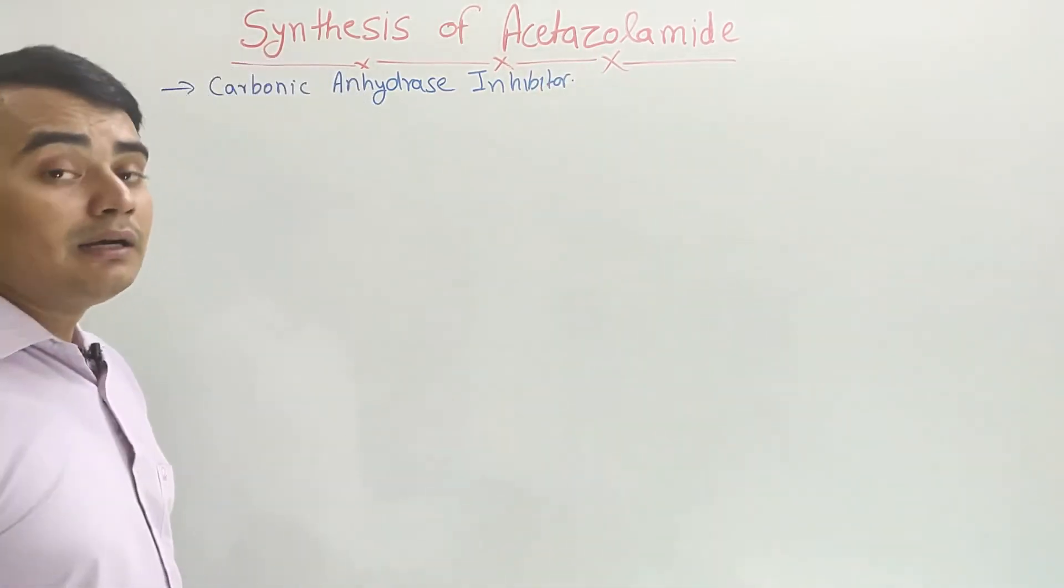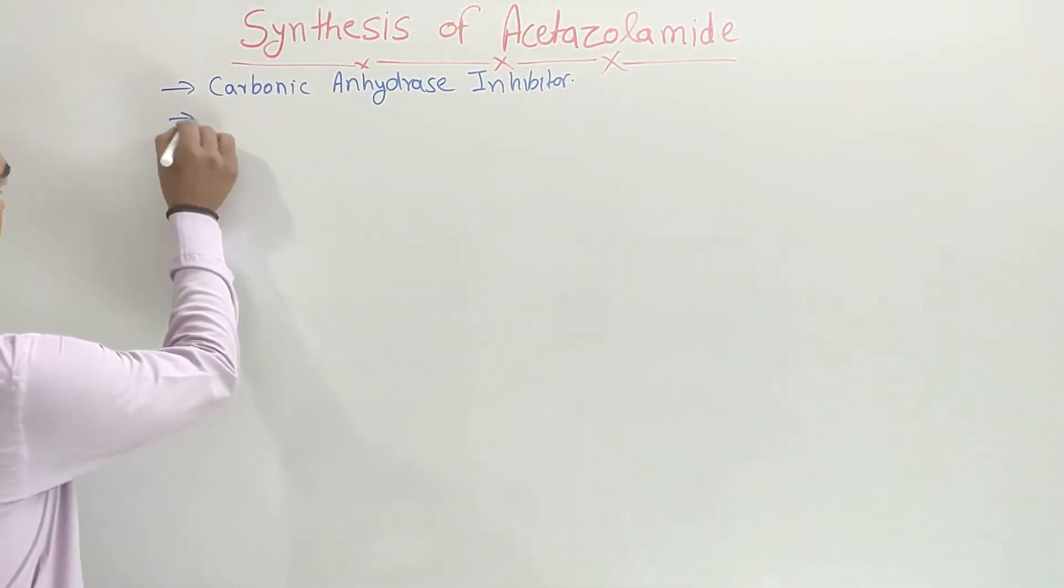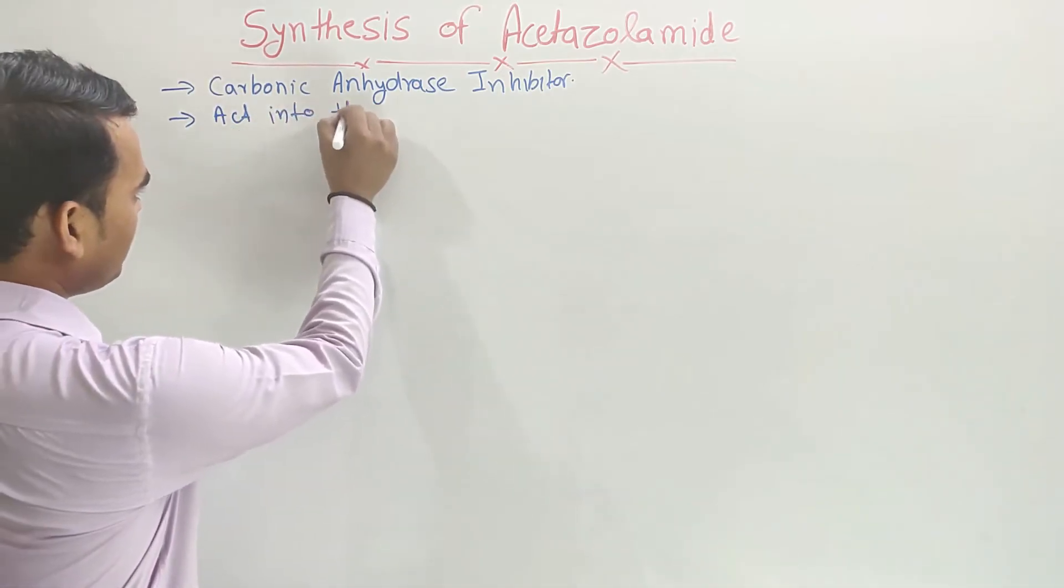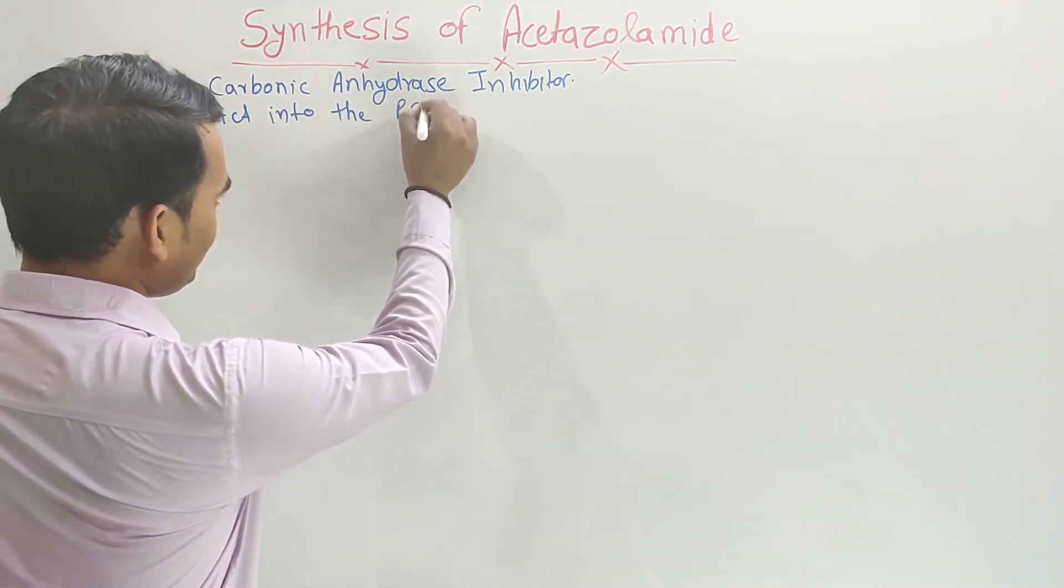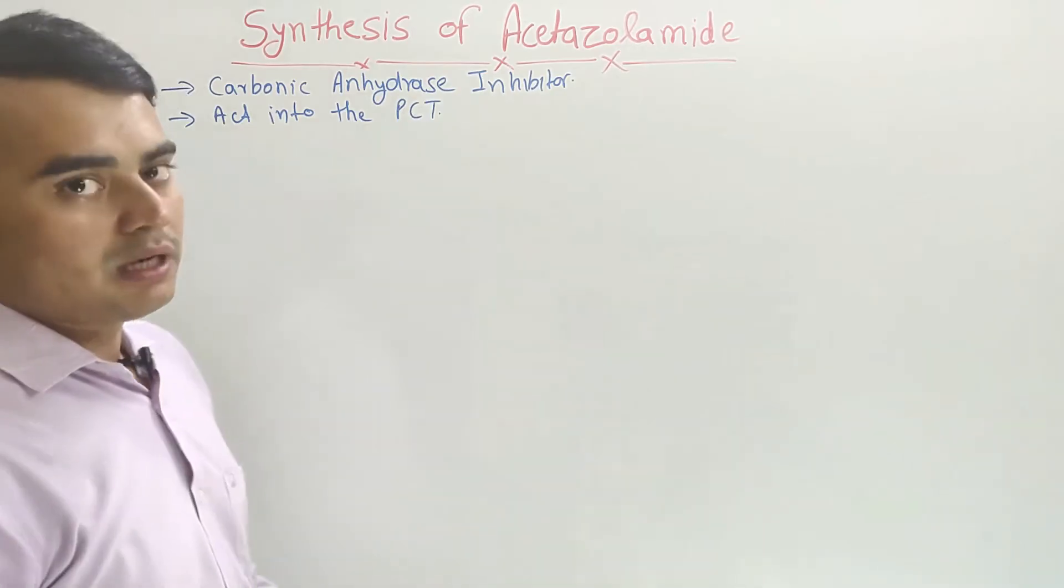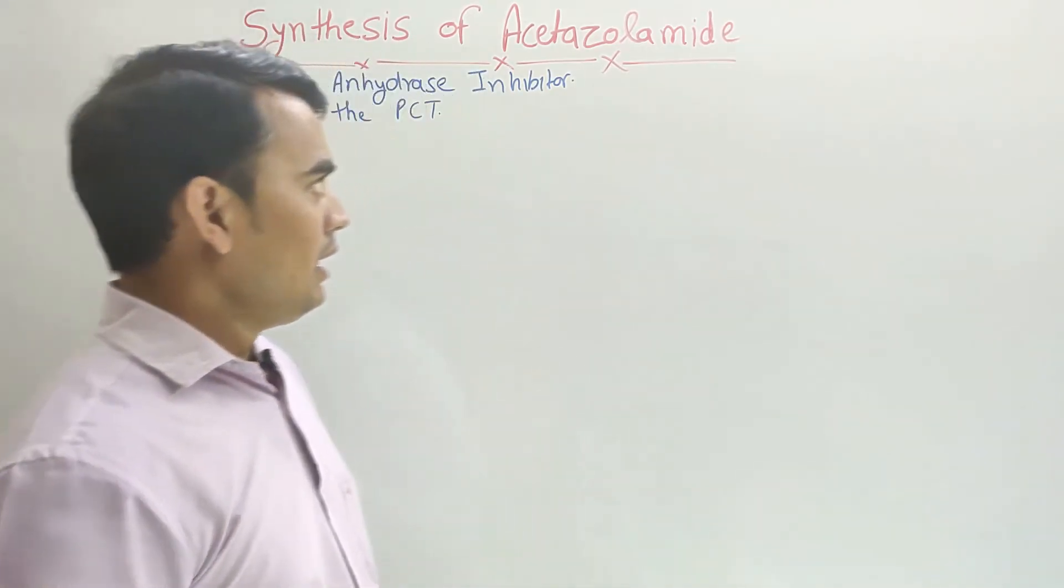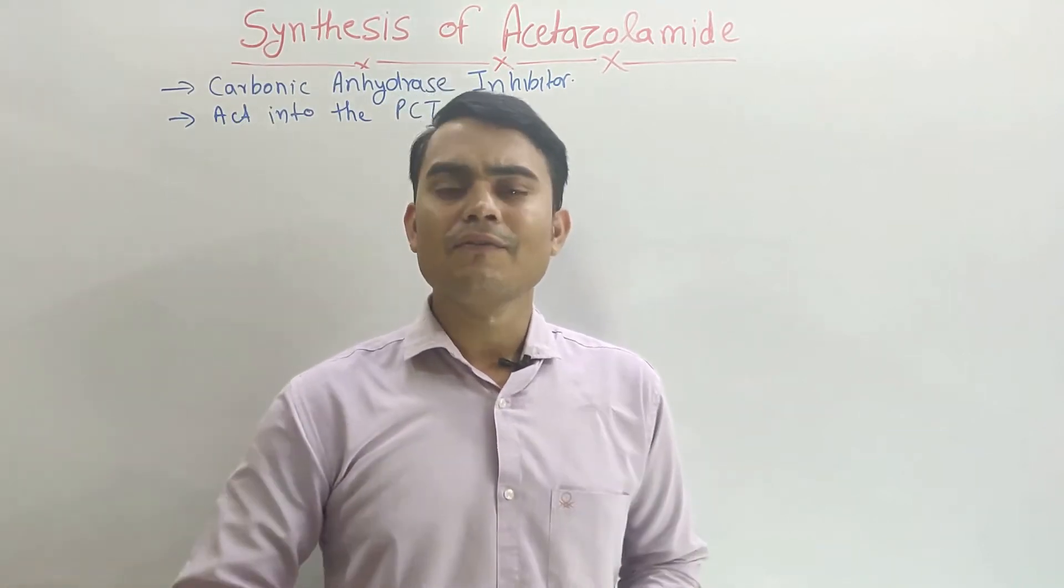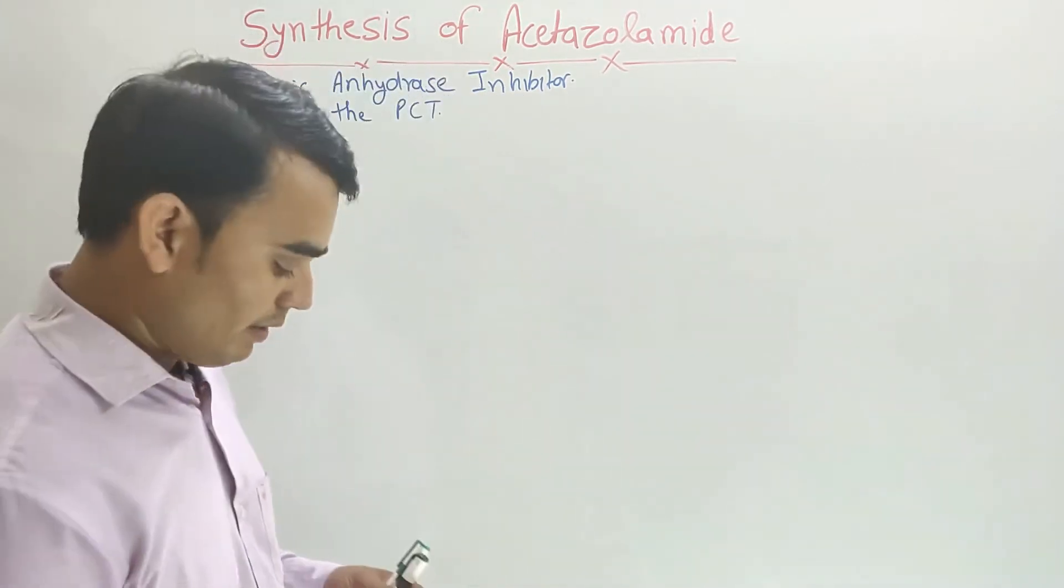And it acts mainly in the PCT, that is proximal convoluted tubule of the nephron. Acetazolamide is a weak diuretic because it has less efficacy. That is why it is a weak diuretic.